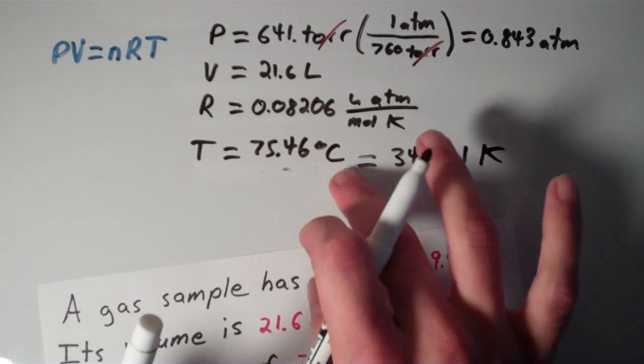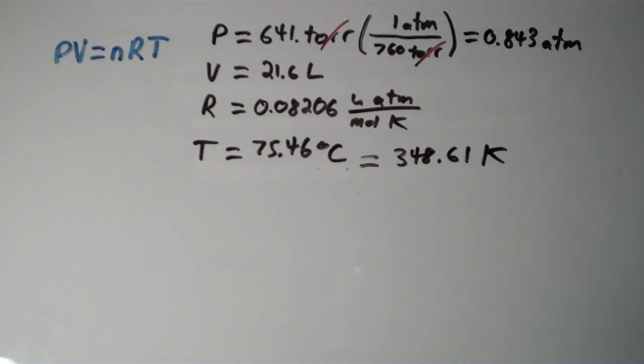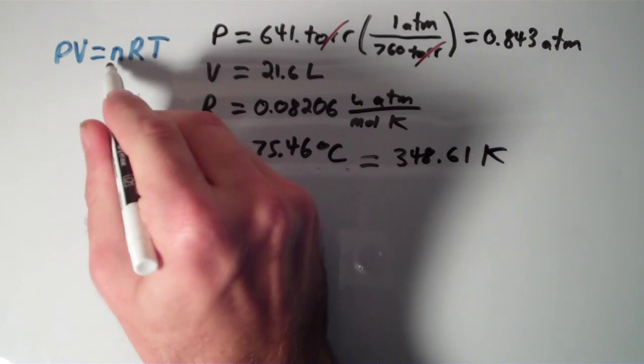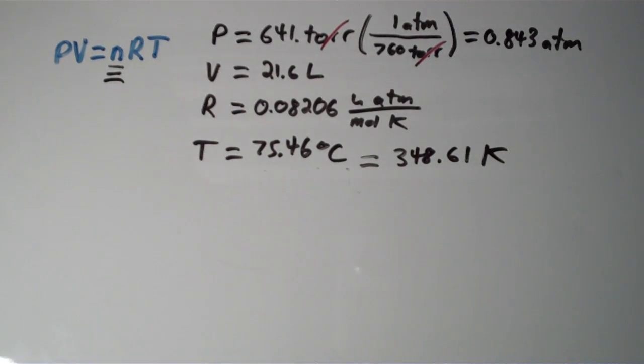So now we have all the right units. So we have pressure, we have volume, we have the gas constant, that's always known. And then we have temperature. So the only thing that we don't have that we're trying to figure out so far is the amount in moles. So this is what's going to lead us to find the molar mass.